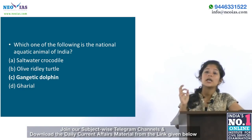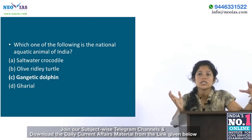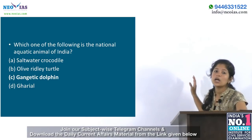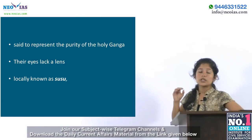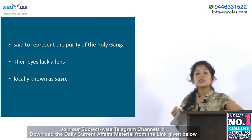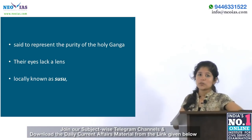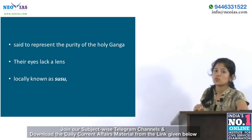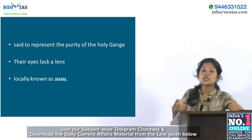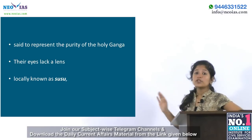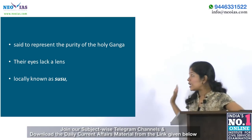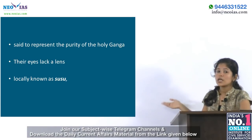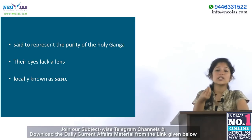The Ganges river dolphin is recognized by the government of India as its national aquatic animal. It is also the official animal of the Indian city of Guwahati. These river dolphins are said to represent the purity of the holy Ganga as they can only survive in pure and fresh water. They lack a lens in their eyes and therefore can function solely as a means of detecting the direction of light, which is why they are also known as blind river dolphins. They are locally known as susu because of the noise they make while breathing.